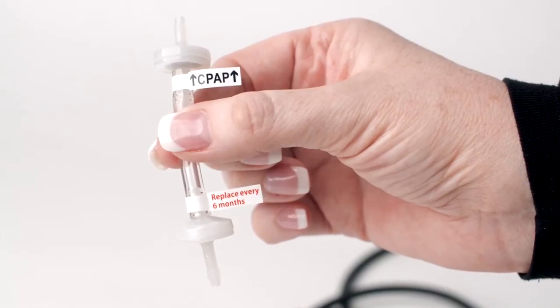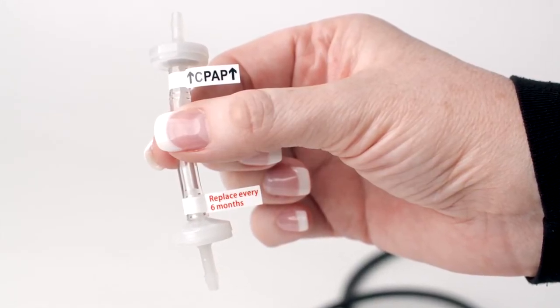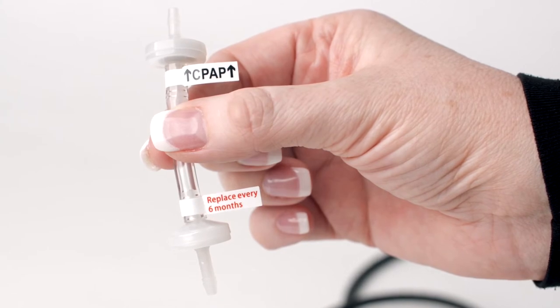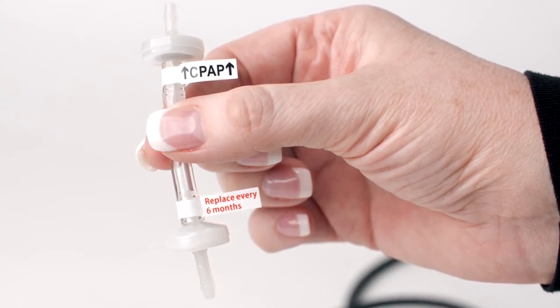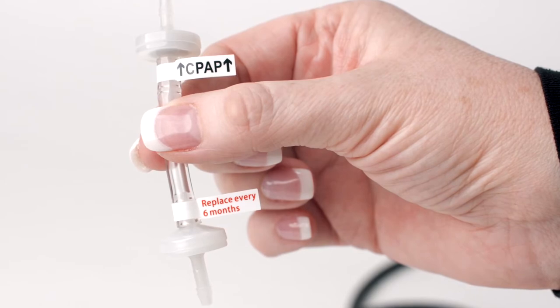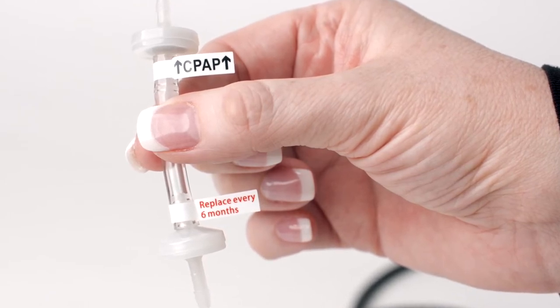The direction of the new check valve is critical. Your SoClean will not work if it is installed facing the wrong direction. The end of your new check valve has a label with two arrows that should be pointing towards your equipment.